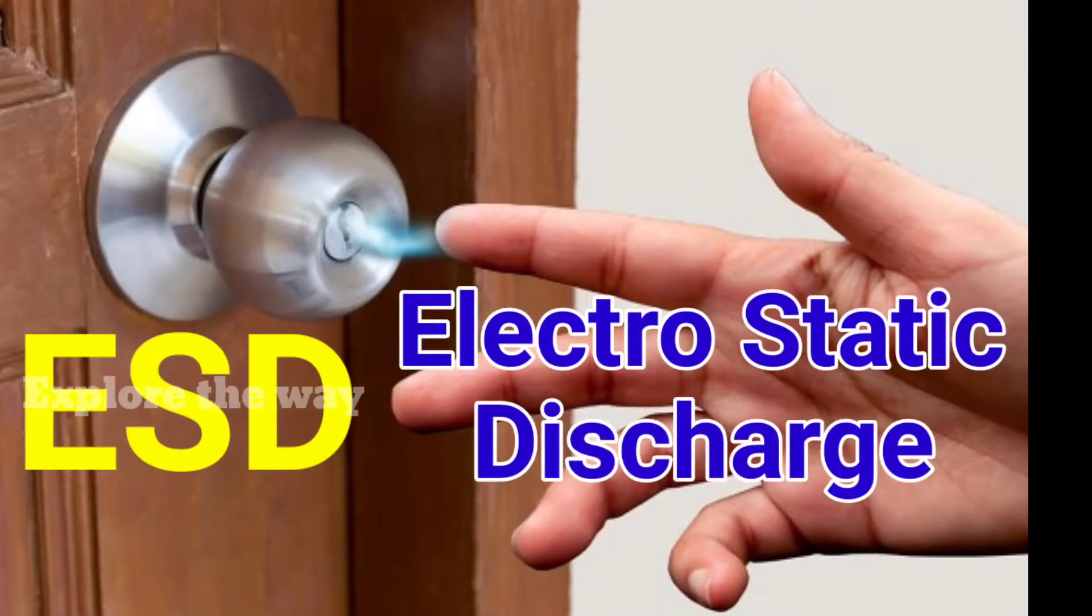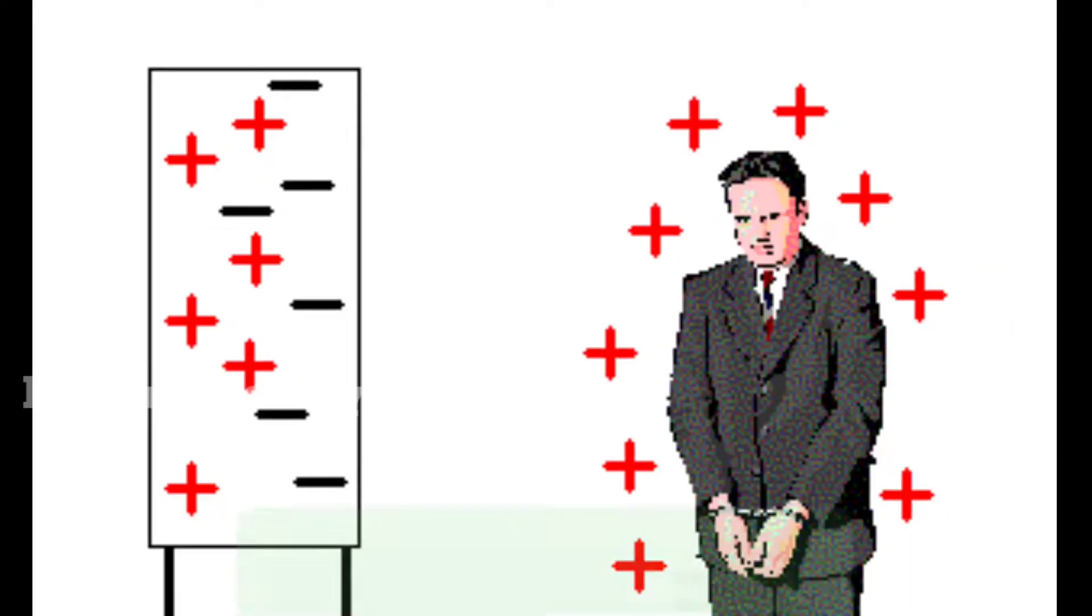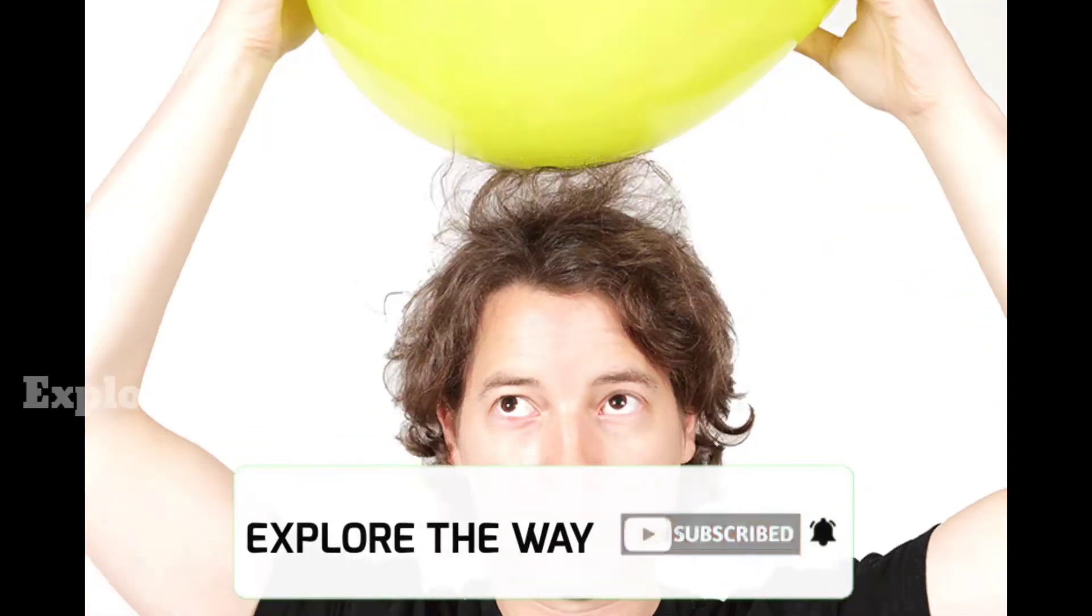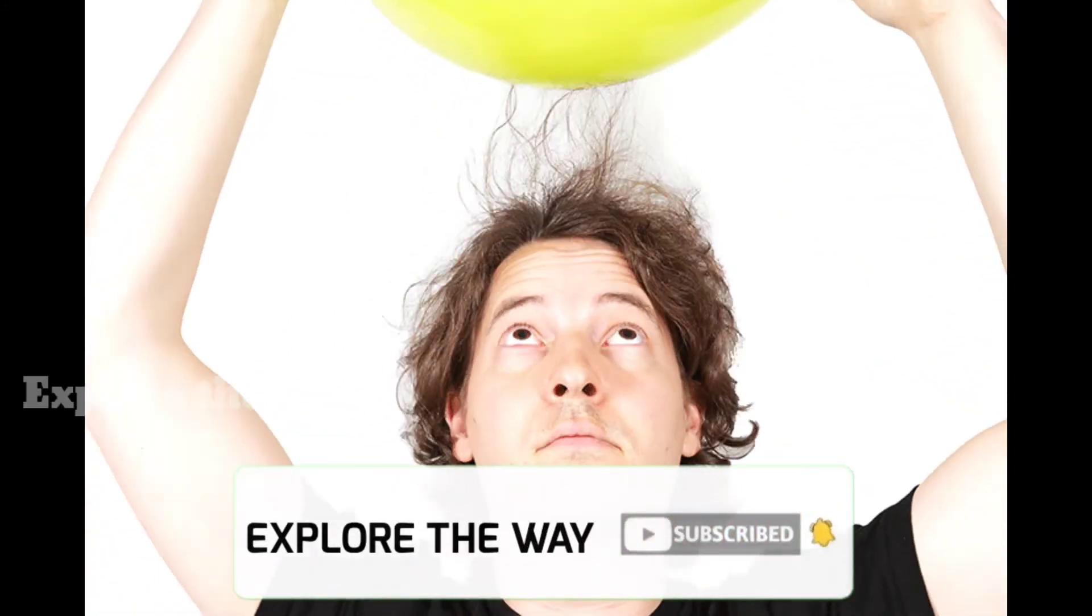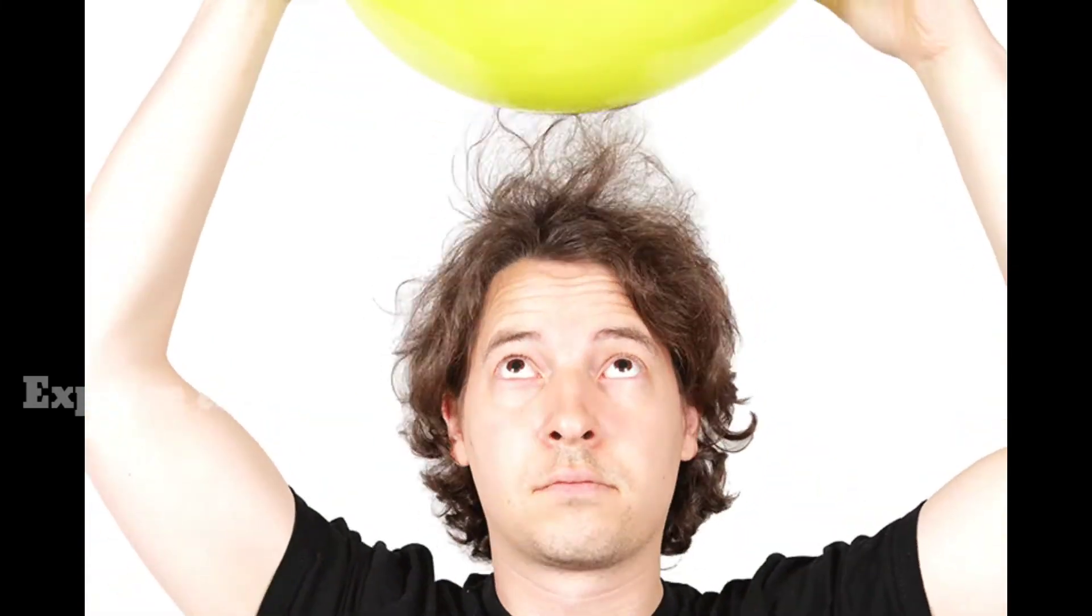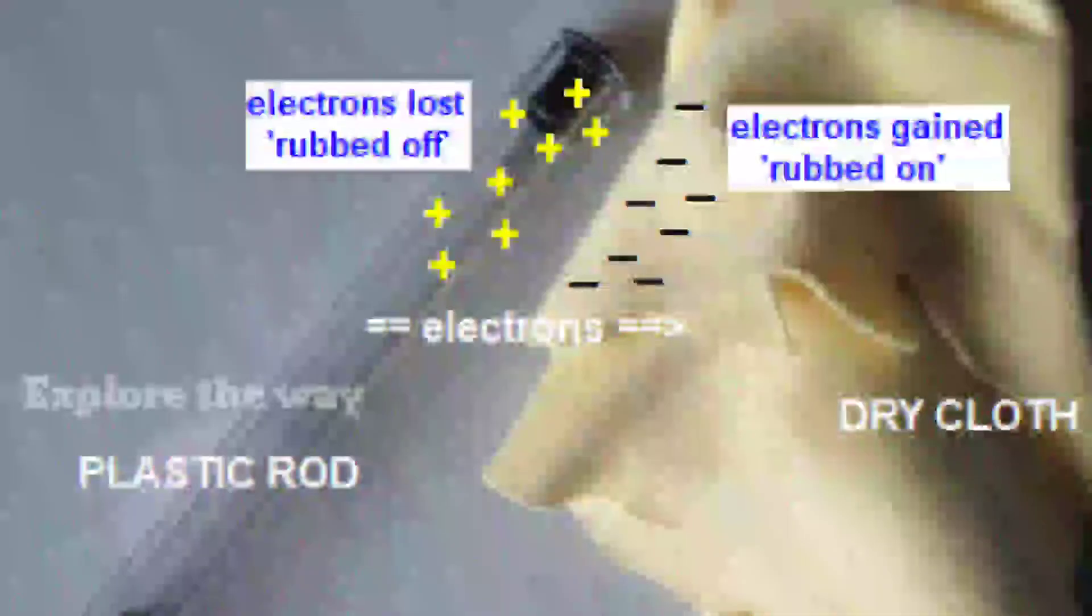First of all, how is a static charge created on an object or body? If we rub two different materials together, they come in contact and separate. In some materials, there is an exchange of electrons from one material to the other.